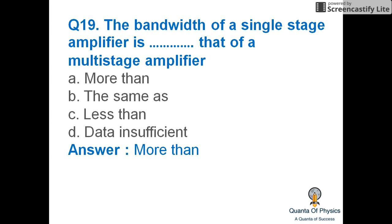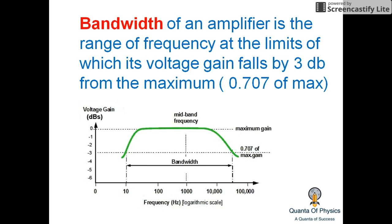The bandwidth of a single-stage amplifier is more than that of a multi-stage amplifier — bandwidth decreases as we add more amplifier stages. The bandwidth of an amplifier is the range of frequencies at the limits of which its voltage gain falls by 3 decibels from the maximum.